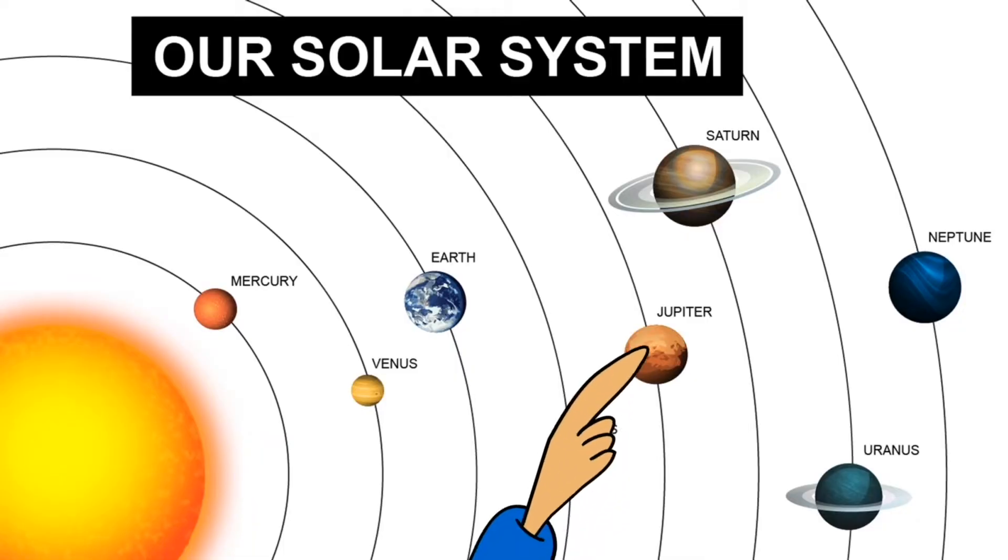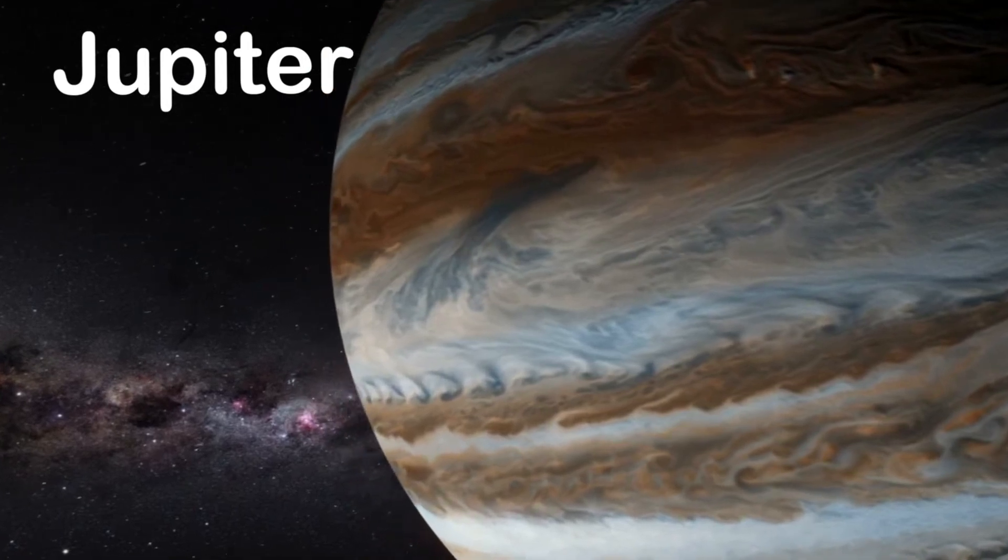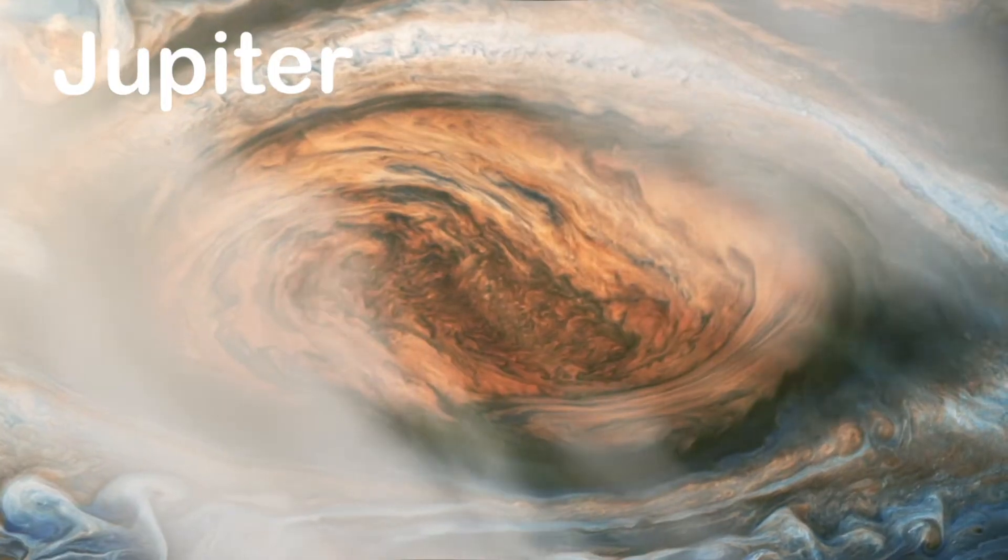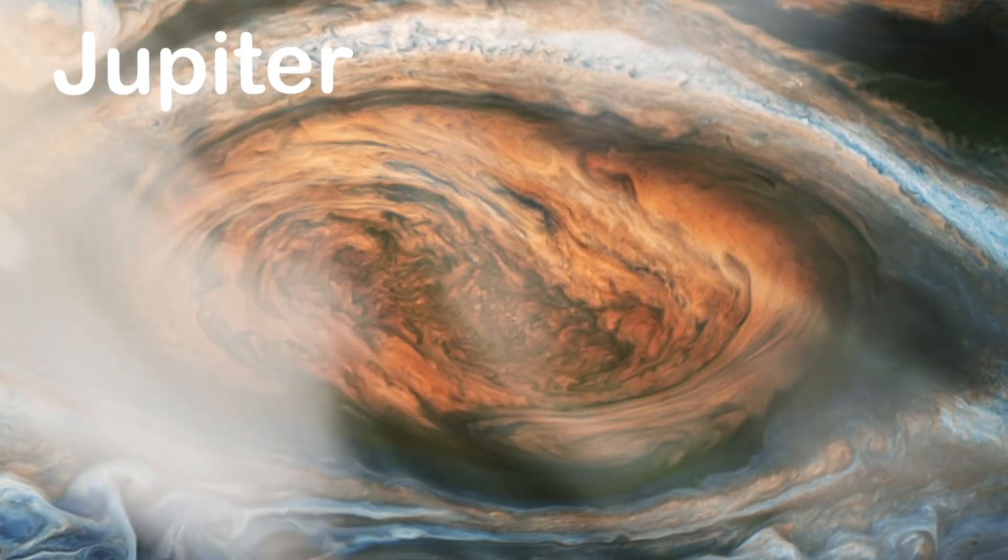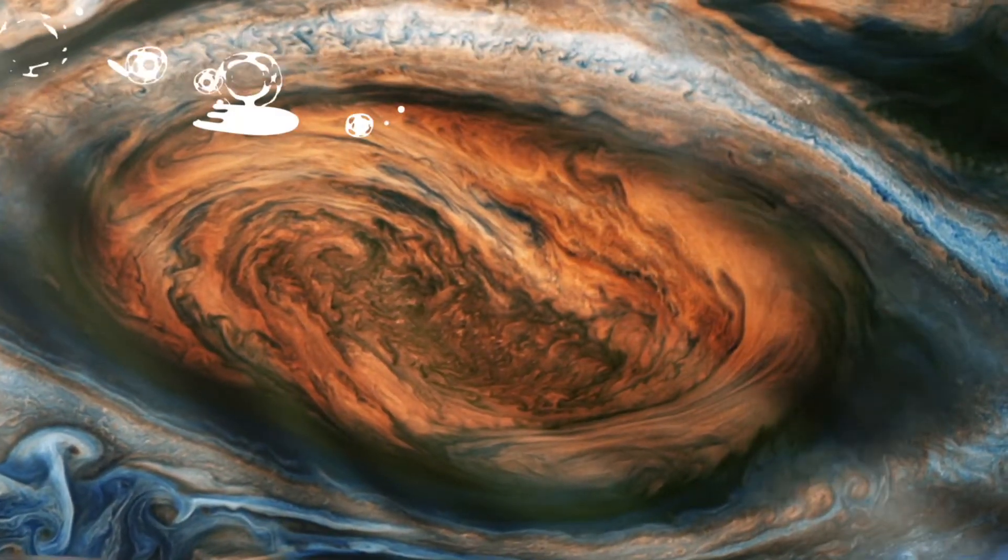The next planet in our solar system is Jupiter. Jupiter's a planet that is made of gas. It's the largest planet and it spins really fast. There's a large storm called the Great Red Spot. It has crimson colored clouds and the wind blows a lot.